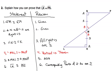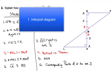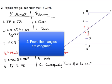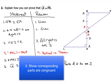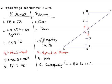Hopefully you've seen a pattern in the first two examples. It boils down to three things: one, interpret the diagram and write down the given information; two, prove that two triangles are congruent; and three, show that the two pieces you need are congruent because of corresponding parts of congruent triangles are congruent. Those are the three steps you'll need for all proofs like this.